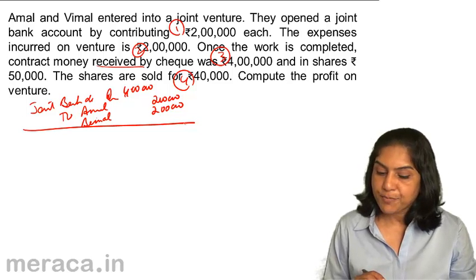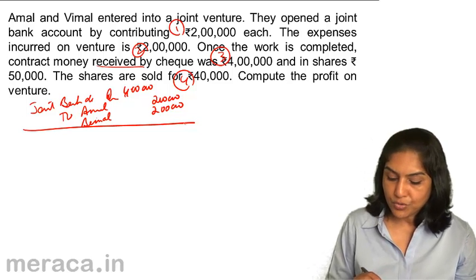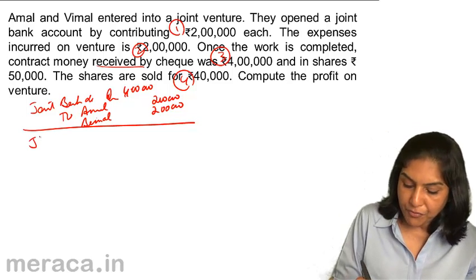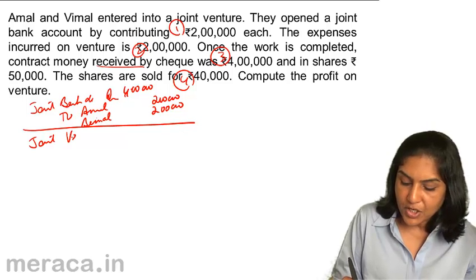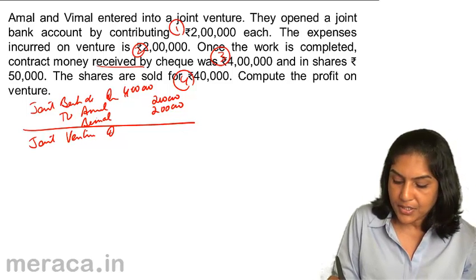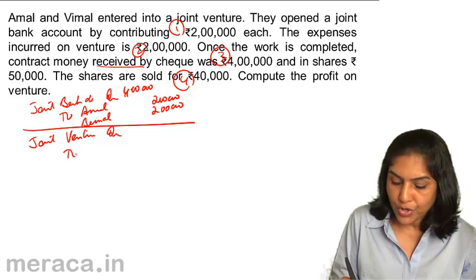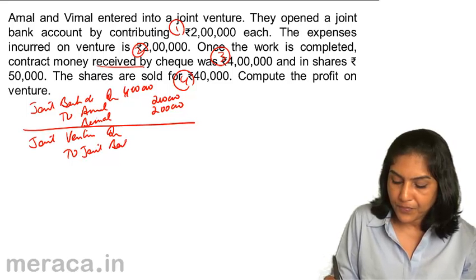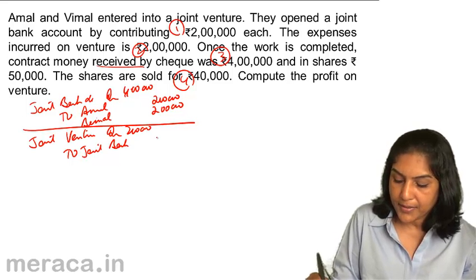Next, expenses were 2 lakh. Therefore, the entry for expenses: joint venture account debit 2 lakh.